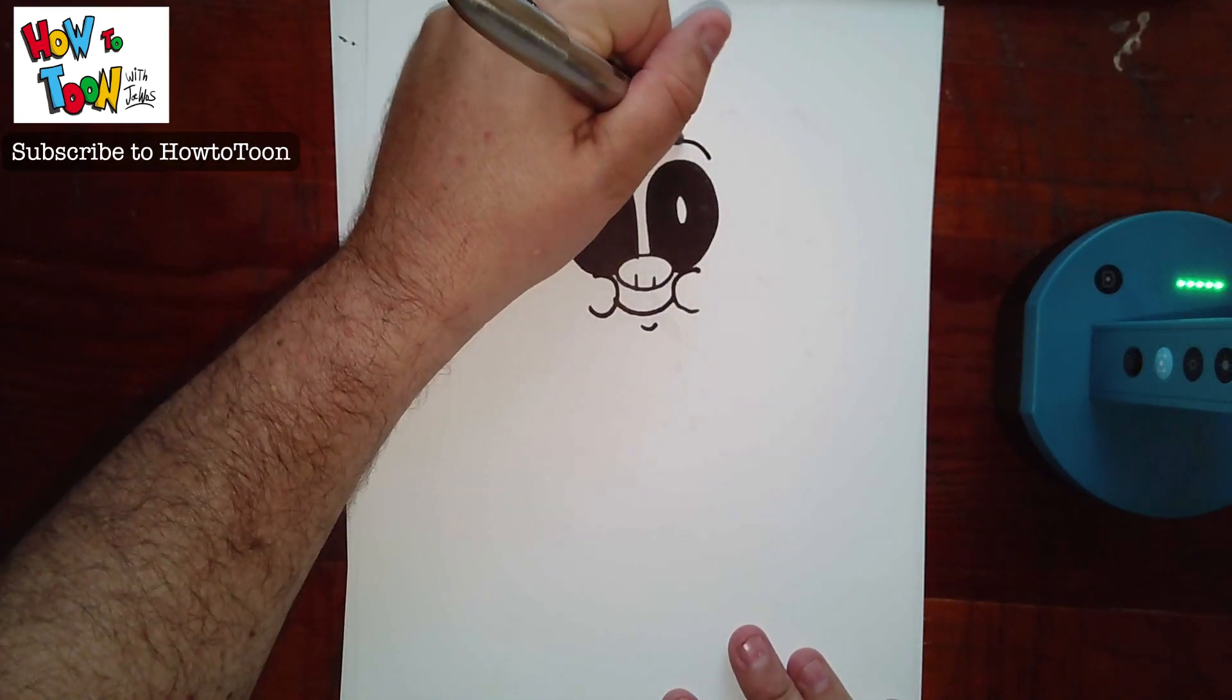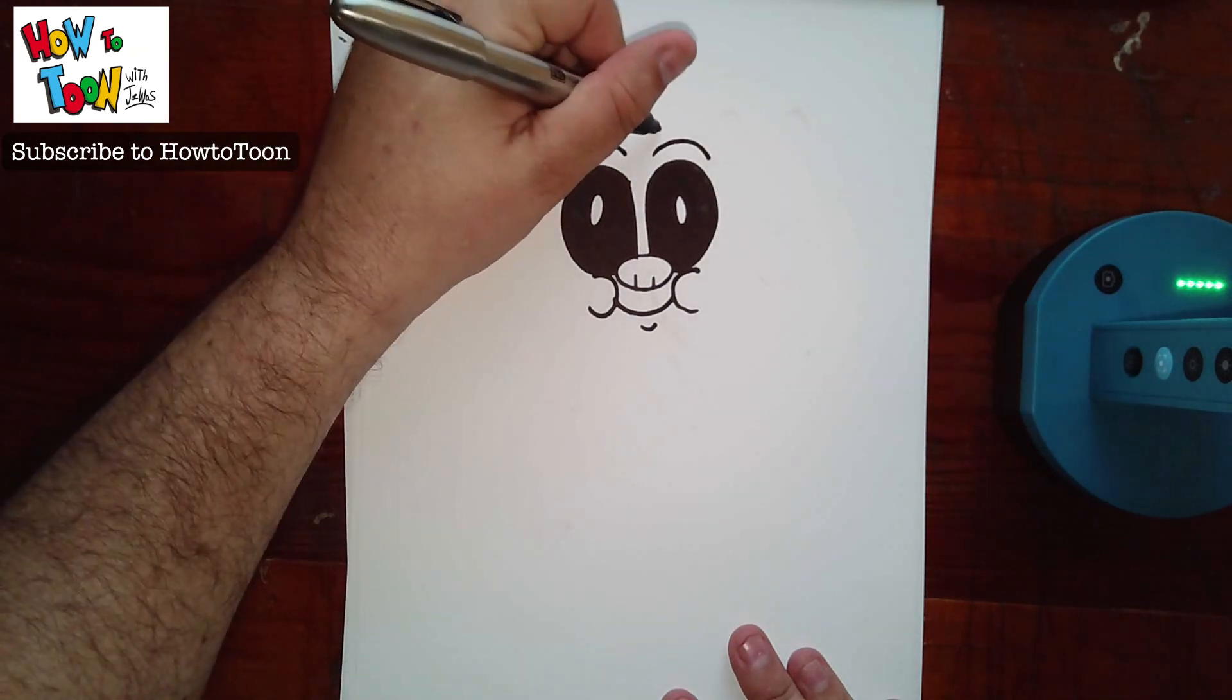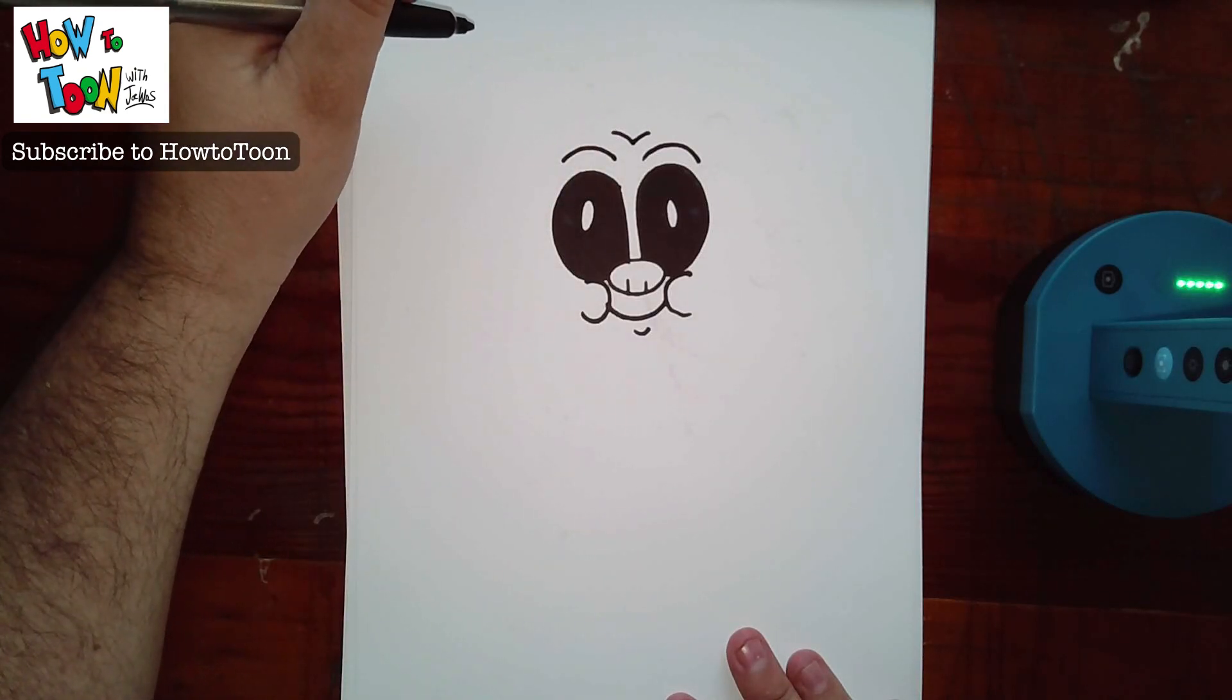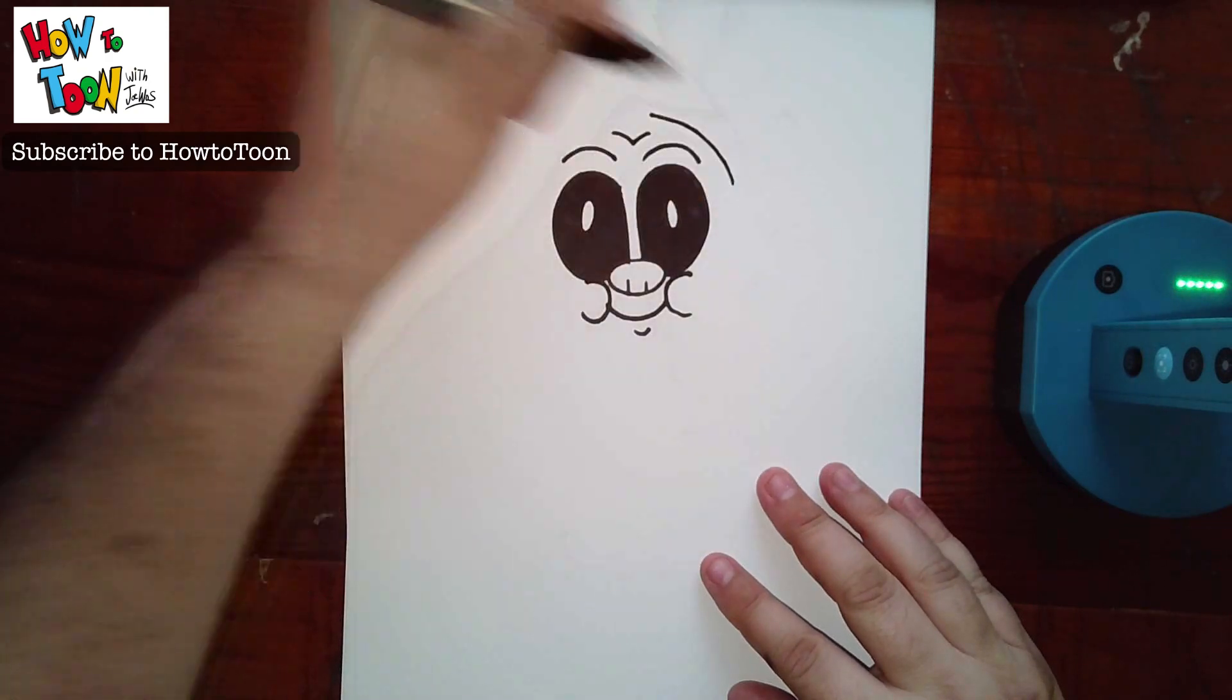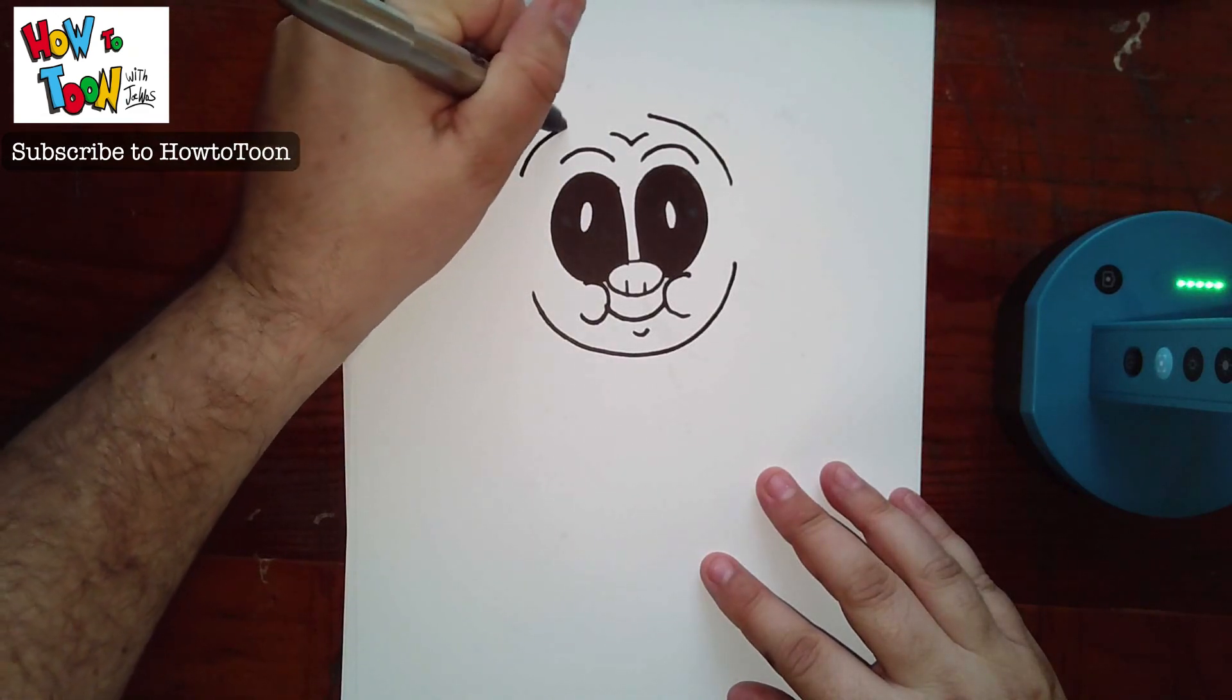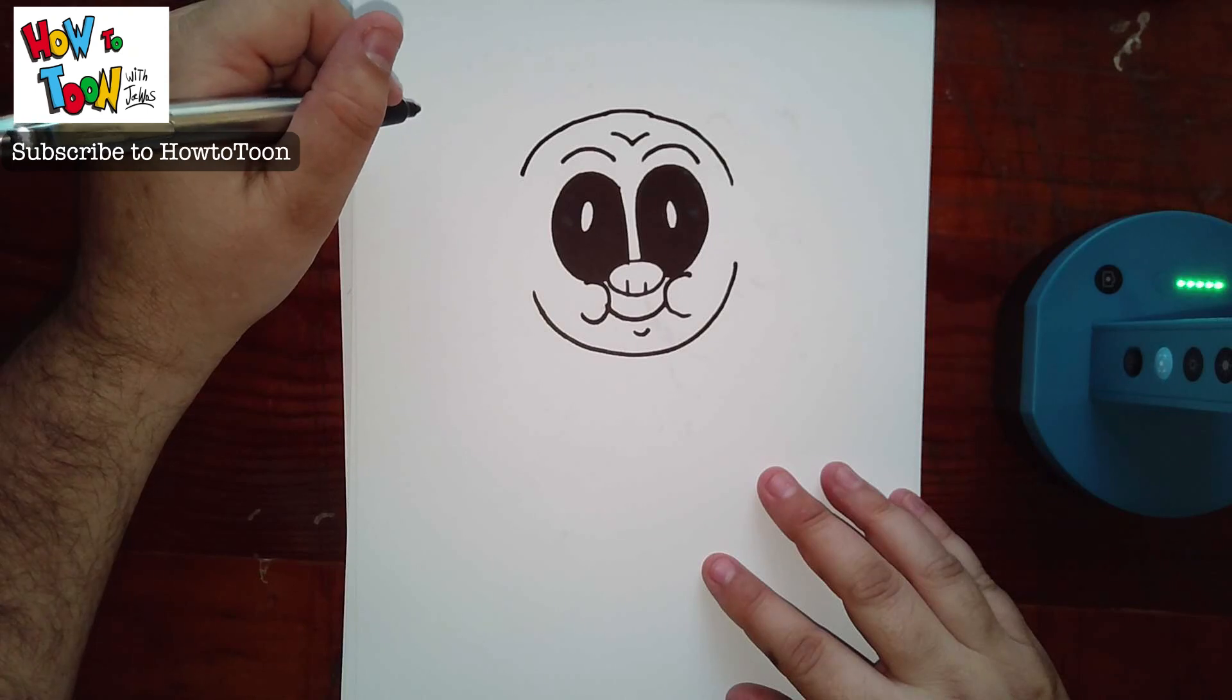All right. A line here. A line here. And then a line like that. Sort of a letter V sort of shape. All right. Now we're going to come around. I'm going to leave a little space there. And then around. Leave a space there. And then I'm going to connect it all up.